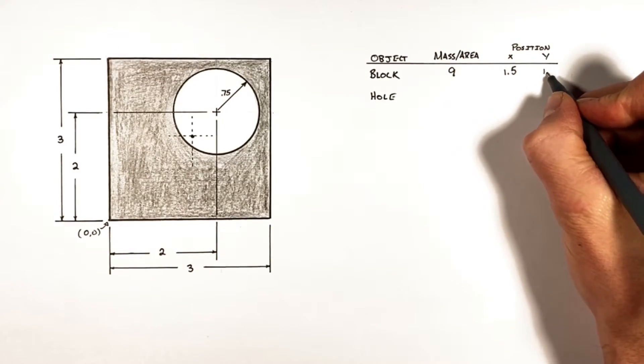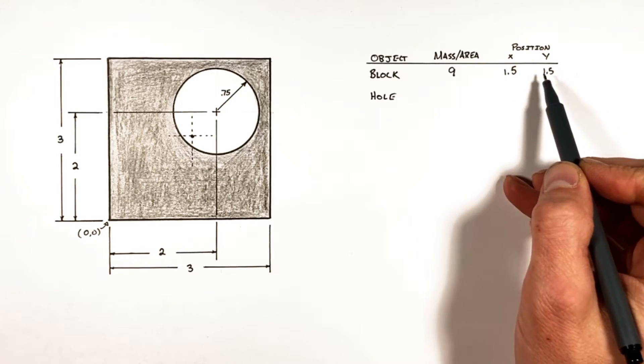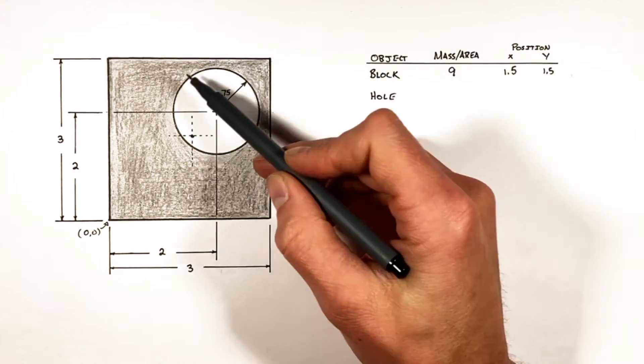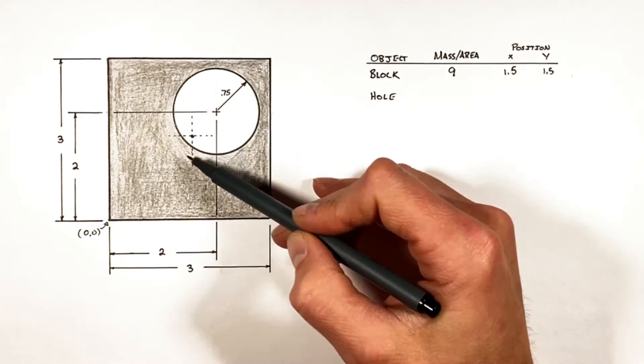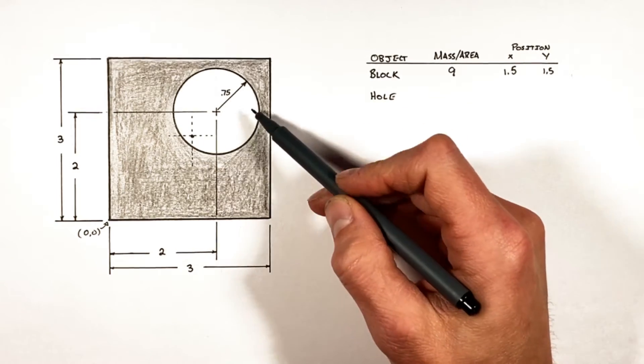Working out our values for the block is pretty easy, but the hole is the key or the trick to the entire problem. See, when we remove this material, this hole has some area, and knowing the radius is 0.75, we can solve for that area. The area of the hole is 1.77.